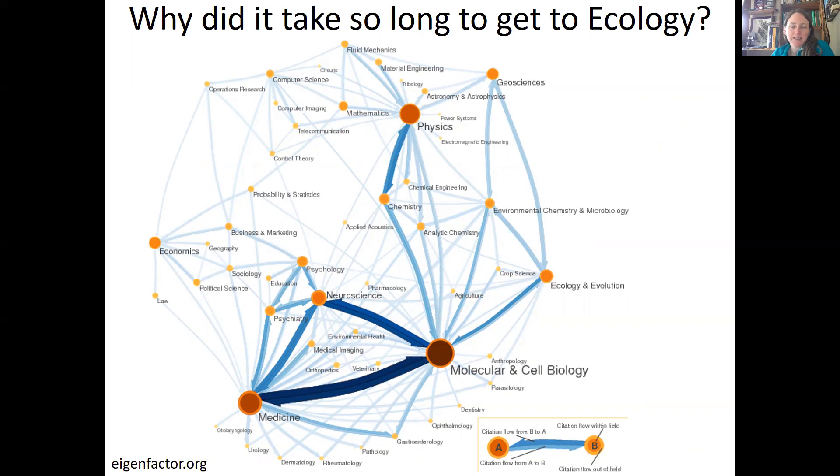So why did it take so long for ecology to really develop a use of meta-analyses? Well, it's partly because ecology is so young itself. It's not really until the 1930s that we start getting a lot of ecology studies starting to be published. And so it takes kind of a building up of the published literature before you can start to mine the published literature and do these meta-analyses.